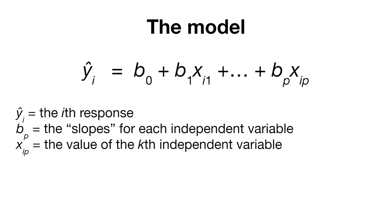Here's the model for multiple linear regression. We have some value yi hat that we're interested in predicting. We have beta 0, our intercept, plus beta 1 times x, where beta 1 is our slope and x is our independent variable of interest. But we can have multiple values of beta — up to p different values for beta, where we might have p different independent variables. The slopes for each independent variable are represented by beta sub p, and the value of the kth independent variable is represented by x sub ip.